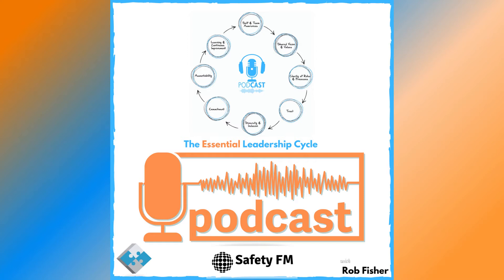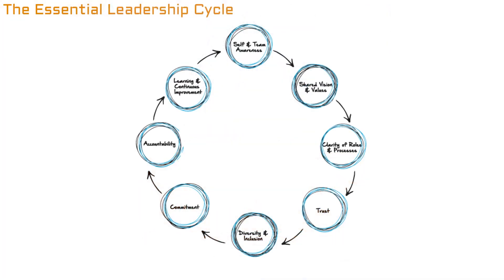In this episode, I'm going to discuss the third attribute of the Essential Leadership Cycle, clarity of roles and processes. Once we're moving towards a better awareness of ourselves and our team, and we're working on creating and verifying a shared vision and values, then we can start to ensure that the roles of our team are clear and our processes are usable and technically accurate.